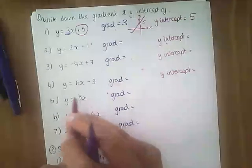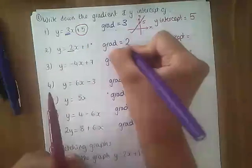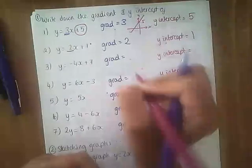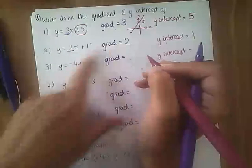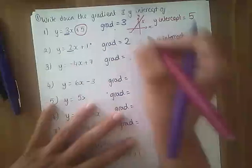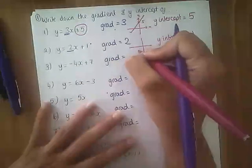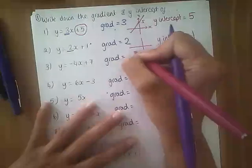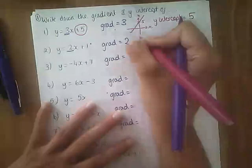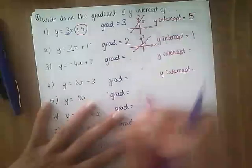Number 2 has a gradient of 2 and a y-intercept of 1. So this line is going to be less steep than the previous line because the gradient is less, and it's crossing the y-axis at 1, so this one's going to look more like that — less steep and crossing at 1.